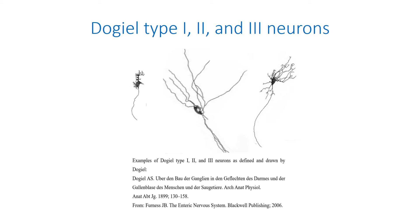Dogel type 2 neurons also have one axon and up to 16 long, thin dendrites leaving the ganglion of origin. It was noted later that many dendrites can be regarded structurally and functionally as axons, and the cells were called multi-axonal. Moreover, some of them occur in the adendritic form. Dogel type 3 neurons have one axon and about 10 or more dendrites branching and ending in the ganglion of origin, but they are longer than dendrites of Dogel type 1 neurons.